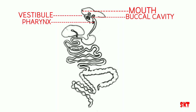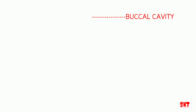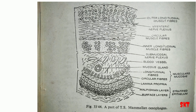Food then enters the esophagus. The esophagus is a long, narrow, straight tube which runs backwards through the neck and thorax and passes through the diaphragm into the abdomen. The esophagus serves to convey the food from the pharynx into the stomach. The wall of the esophagus contains four concentric tissues or coats beginning from outside.